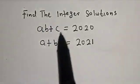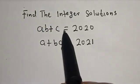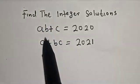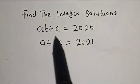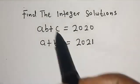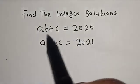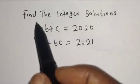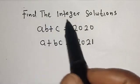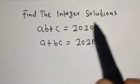Hello, welcome to MathGest. In this class, we want to find the value of A, B and C from this given equation. The question says: find the integer solutions.